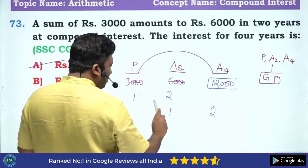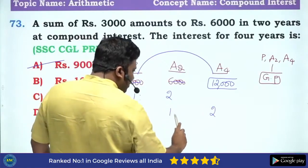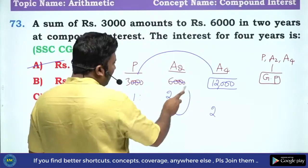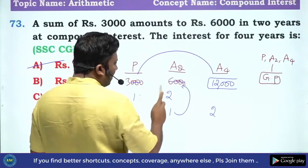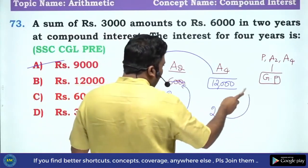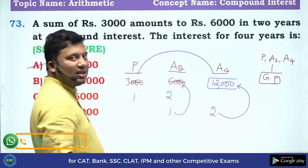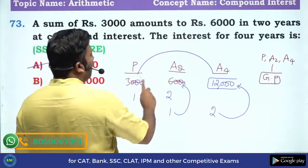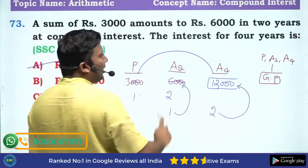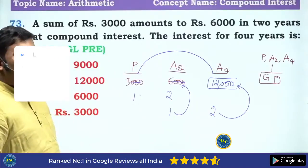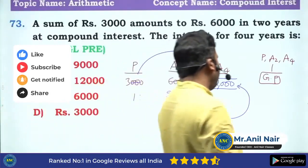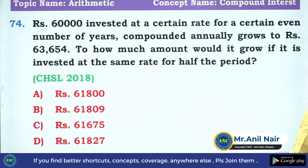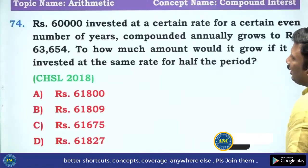Using the ratio method: P to A2 is in the ratio 1 is to 2. A2 to A4 should also be in ratio 1 is to 2. So 1 becoming 6,000 means 2 will become 12,000. Therefore 3,000 is becoming 12,000 and the total interest is 9,000. I hope the idea is clear.